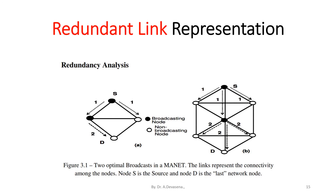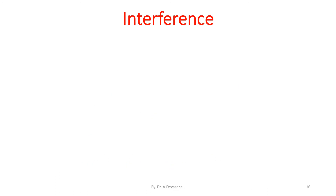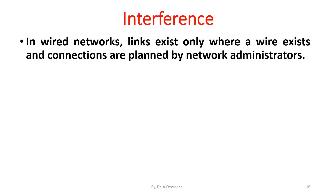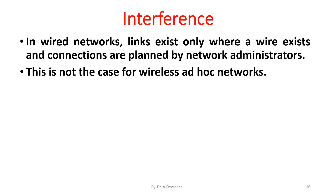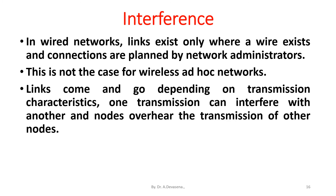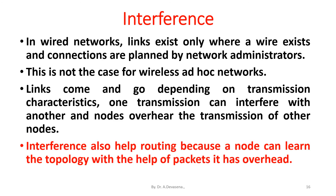The difference of interference: in wired networks, links exist only where a wire exists and connections are planned by network administrators. This is not the case for wireless ad hoc networks. Links come and go depending on transmission characteristics. One transmission can interfere with another, and nodes overhear the transmissions of other nodes. Interference also helps routing, because a node can learn the topology with the help of packets it has overheard.